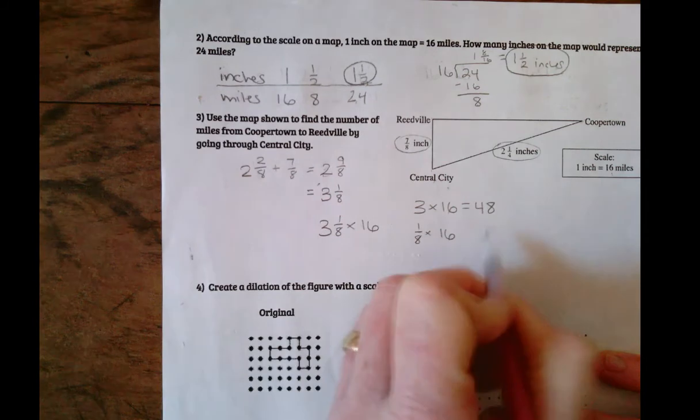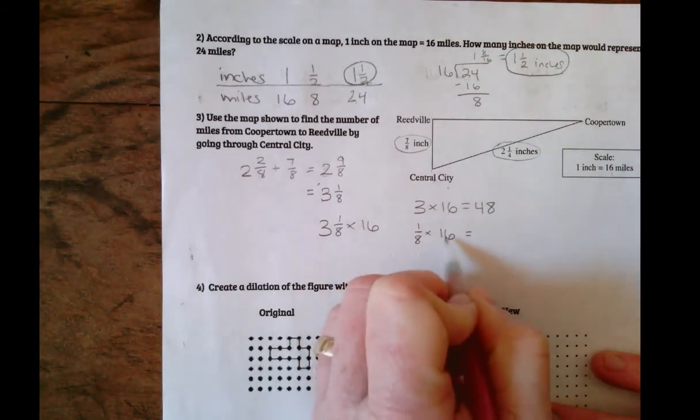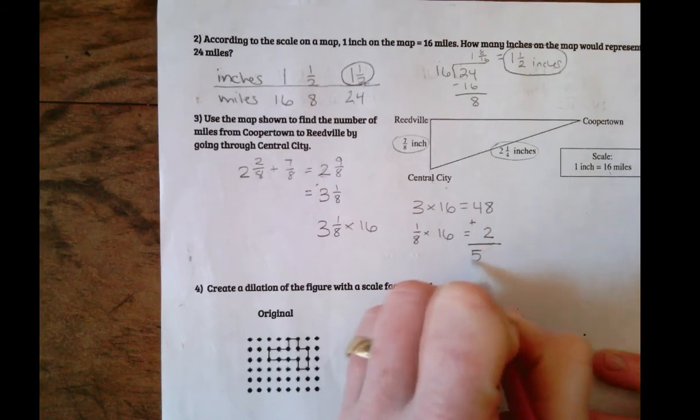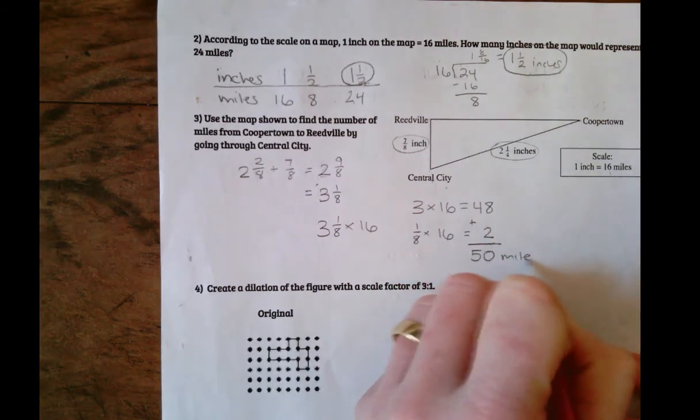One eighth, one eighth times sixteen. Sixteen divided by eight is two times one, which is two. Add those together, and I get fifty miles.